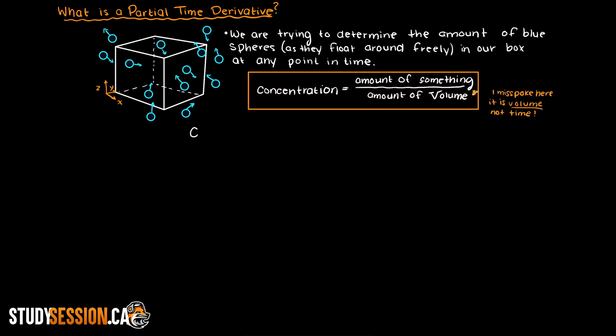So what variables affect our concentration here? Well, we are going to have our spatial coordinates and time, but how does that actually track and count the concentration of blue spheres within our box at a certain time?